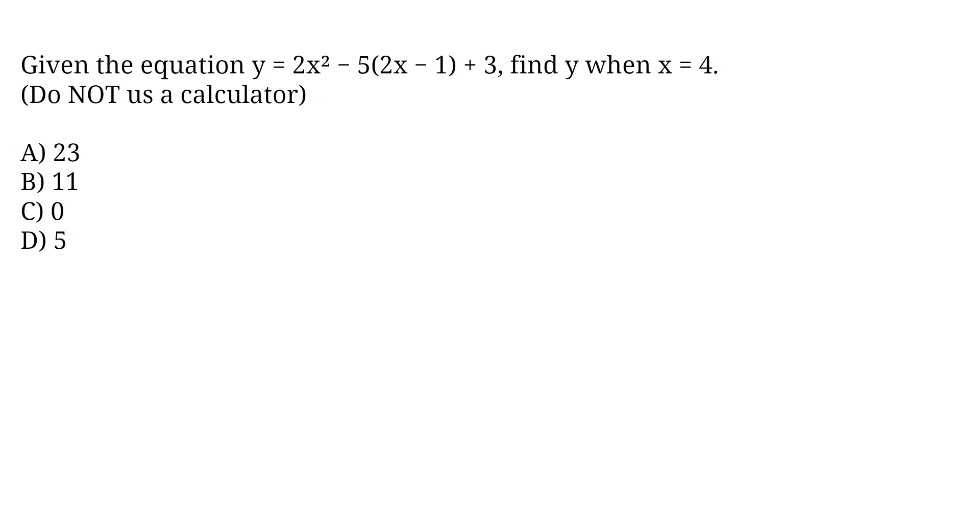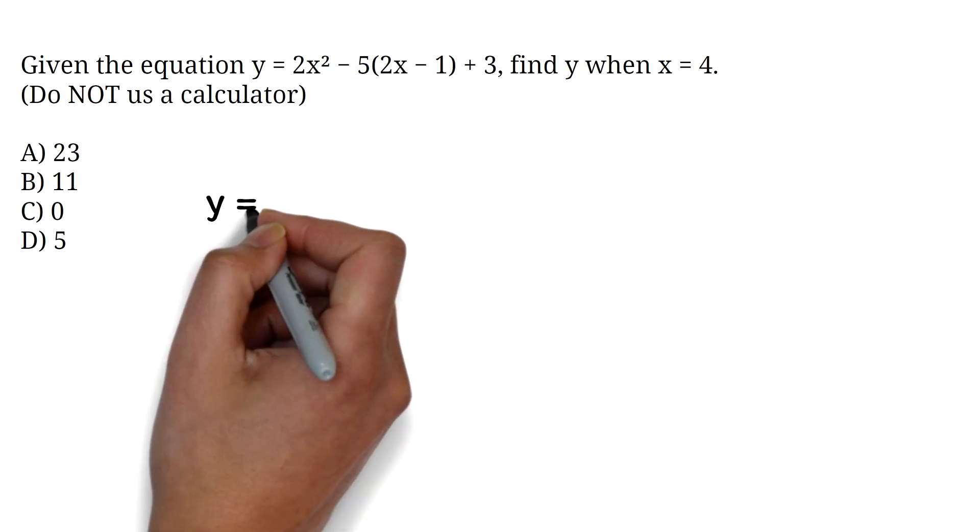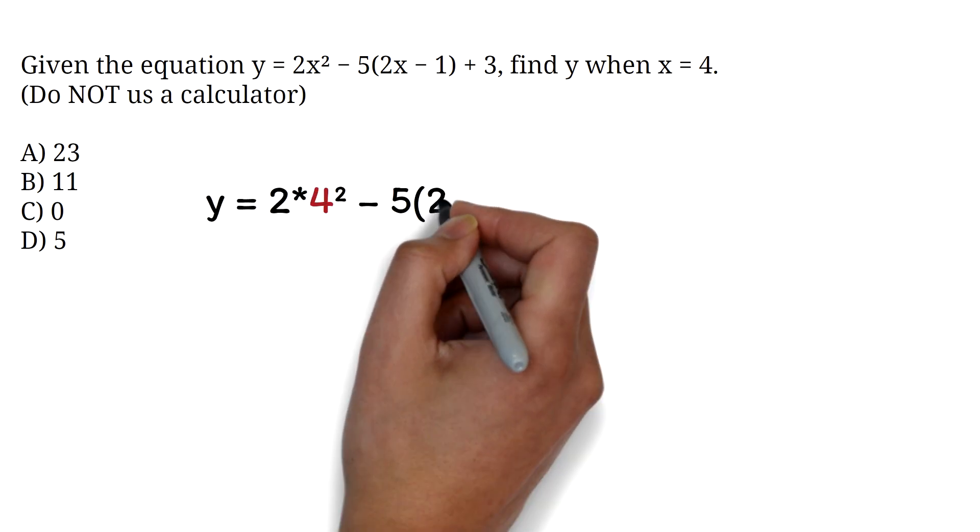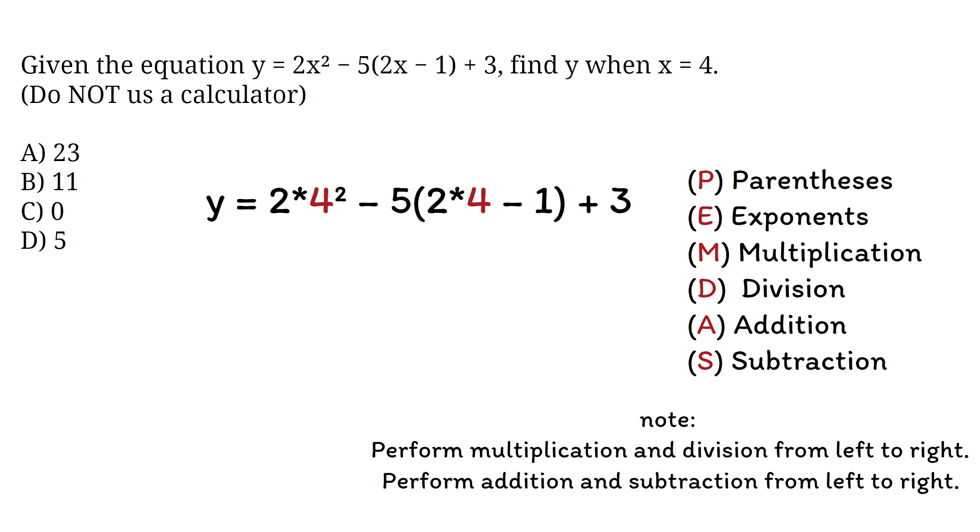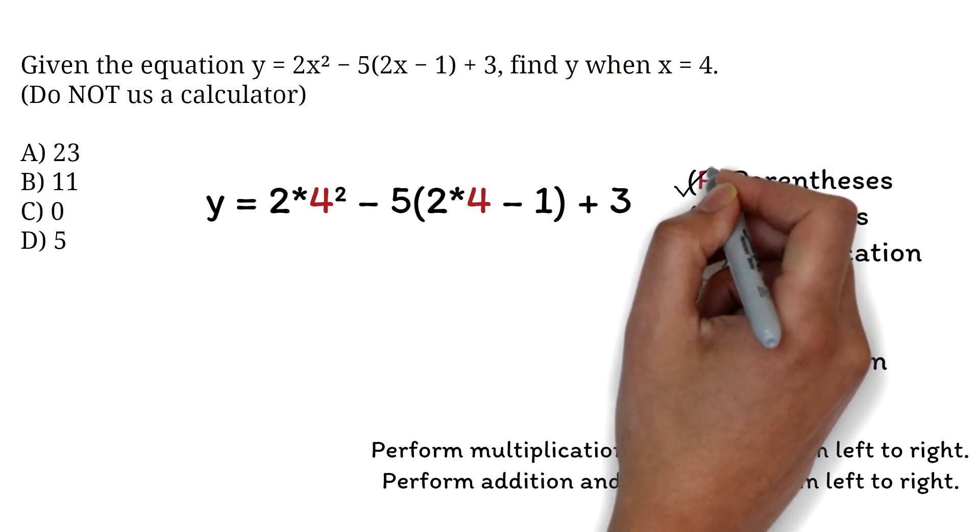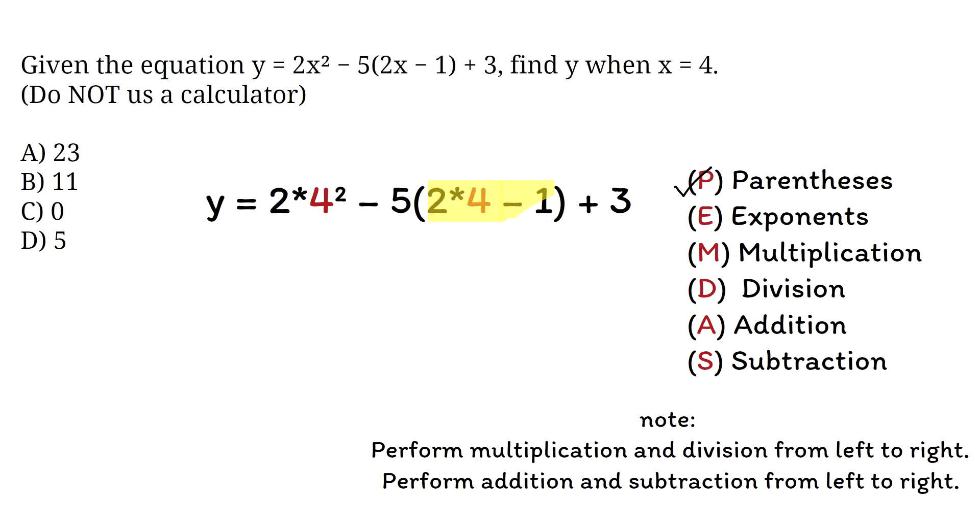The work here is being able to replace values and use the order of operations. We will replace x with 4. So we have y equals 2 times 4 squared minus 5 times 2 times 4 minus 1 plus 3. Here is the order of operations. You can check out our video on order of operations if you need a detailed lesson. With the order of operations, we will perform the parenthesis first. So we have 2 times 4, which is 8, minus 1. This will give us 7. Next, we will do the exponent. We have 4 squared, which is 16.